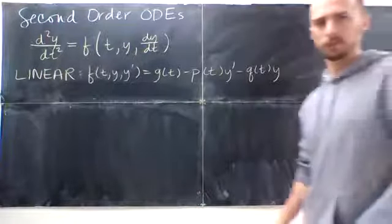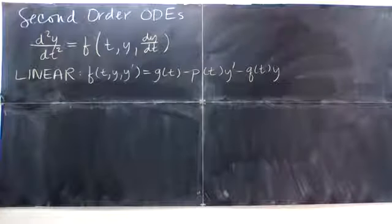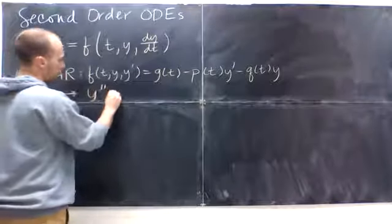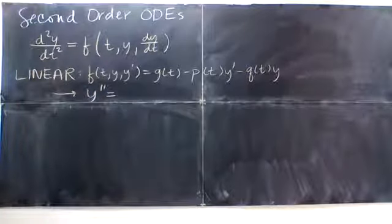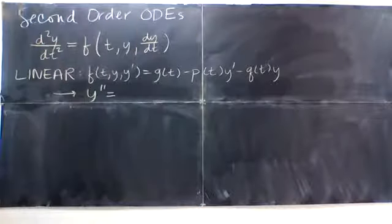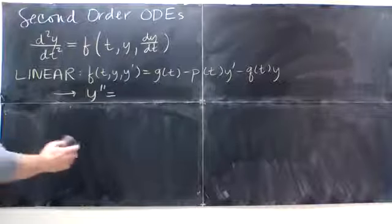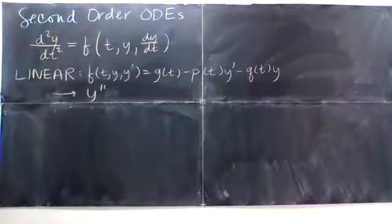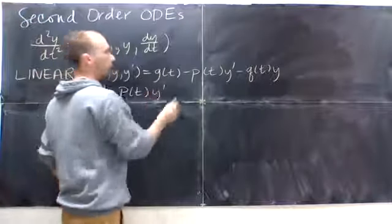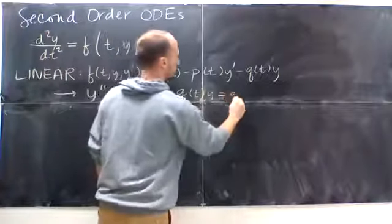When I saw this in the text, I was like, why would they define it to have a negative? But then they said, because what they really usually, the way we write this, is y double prime plus p(t)y prime plus q(t)y is equal to g(t). That's typically how we're going to write it.